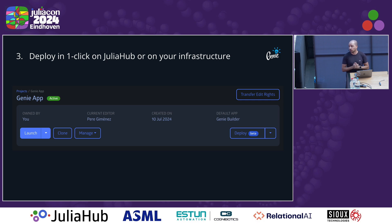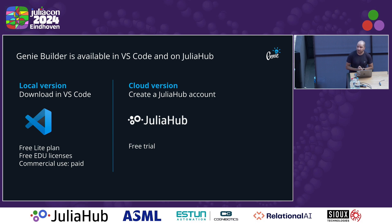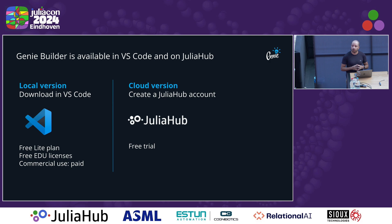You can deploy on JuliaHub in just one click, where after a moment you'll have a link to share with others so they can access the application. You can also deploy on your own infrastructure. Genie Builder is an extension for VS Code that can be installed locally or used online on JuliaHub in their cloud IDE.